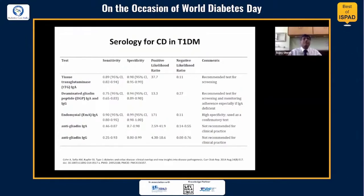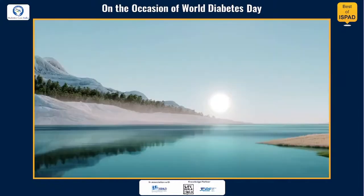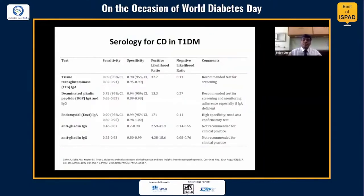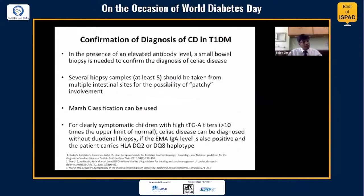Deaminated gliadin peptide and endomysial antibody are also used more commonly. Anti-gliadin IgA and anti-gliadin IgG are often not done in clinical practice. In the presence of an elevated antibody level, a small bowel biopsy is needed to confirm the diagnosis. Usually multiple samples — at least five — are taken, because there is often patchy involvement of the gut.